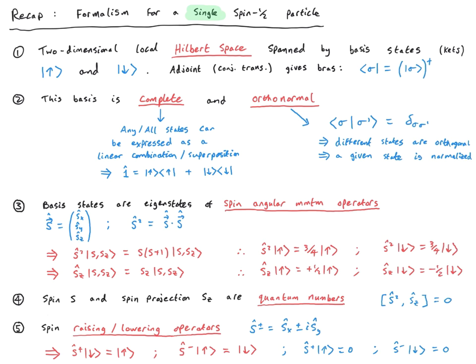The spin s and spin projection sz are quantum numbers. This tells us we can write a simultaneous eigenbasis labeled by s and sz, which follows from the fact that S-squared and Sz commute — their commutator is identically zero. For electrons, which are spin-half particles, we typically drop the s label and just use the sz component, denoting states simply with an up or down arrow, bearing in mind the deeper implication of what this means.